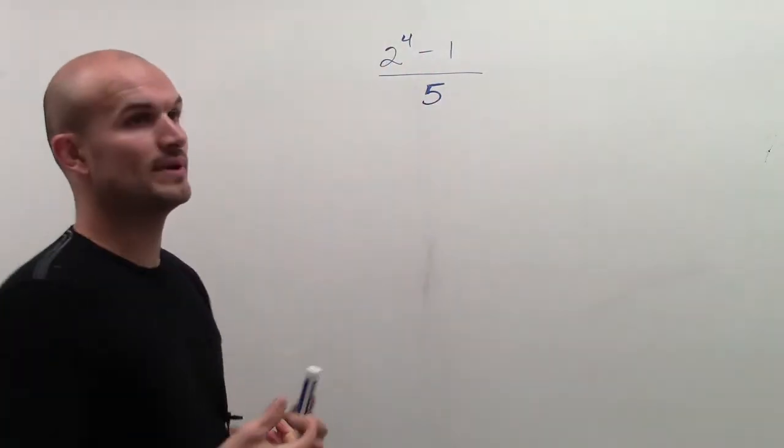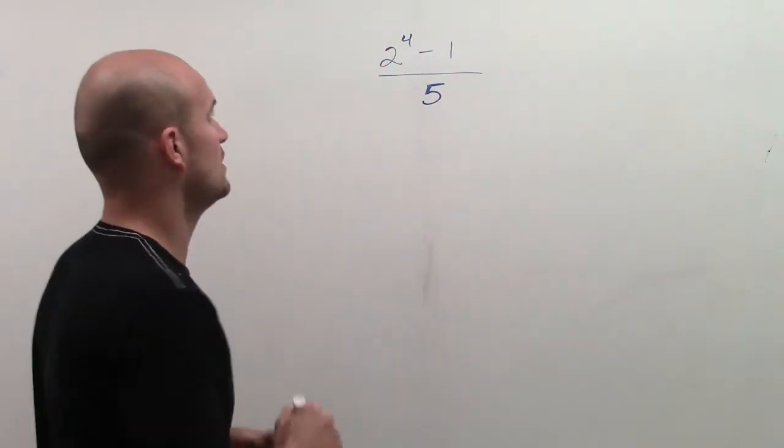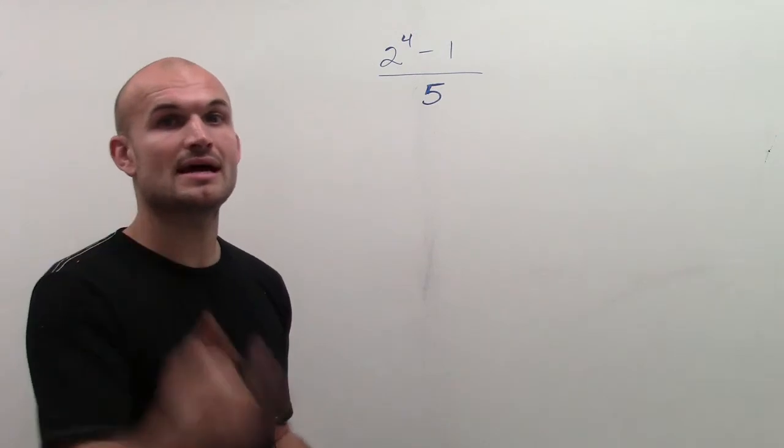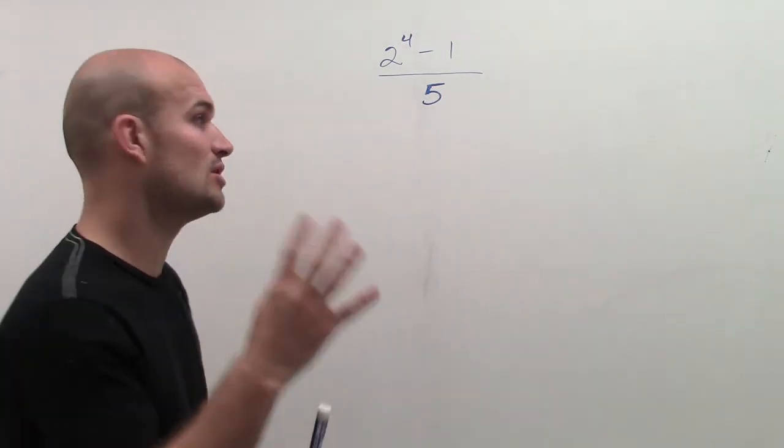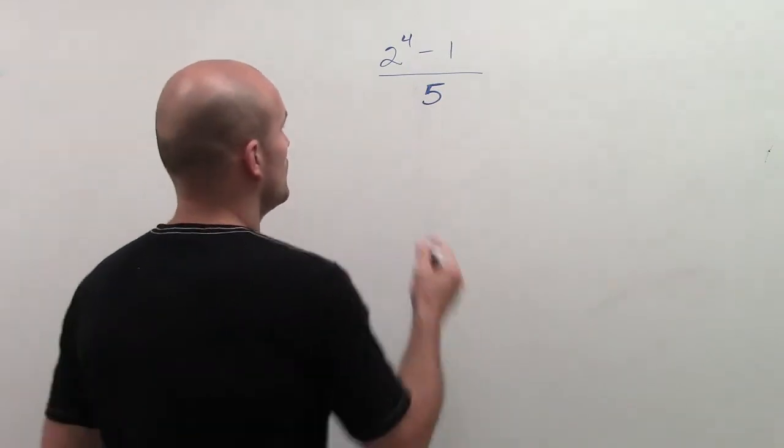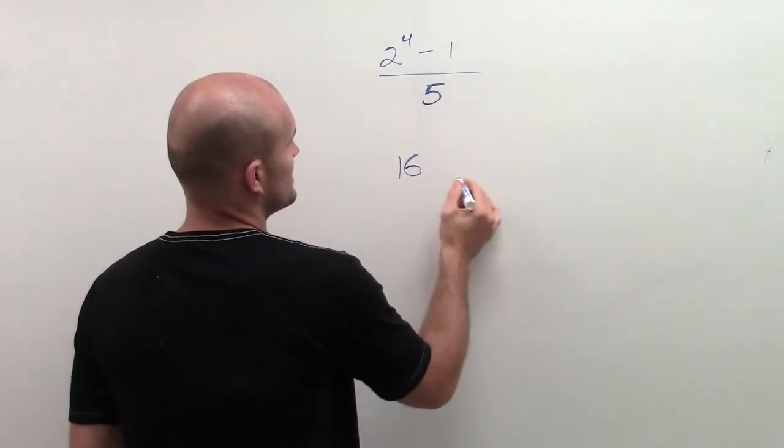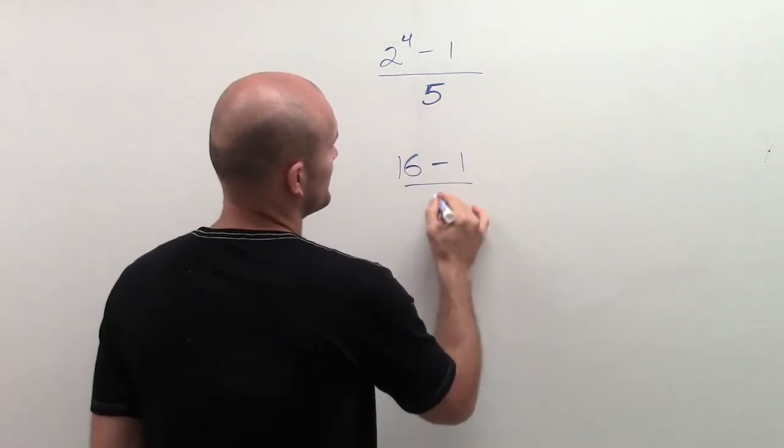So what is 2 to the 4th? Well, 2 to the 4th means 2 times 2 times 2 times 2 - multiplying 2 by itself 4 times - which gives us 16 minus 1 divided by 5.